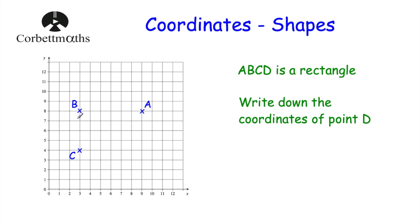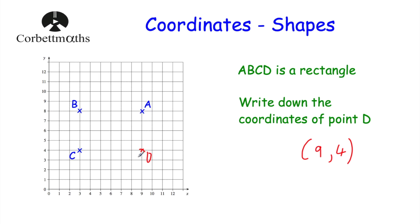So that means that, for instance, if this length is 4 across, this side over here would also be 4, so that means that D would be here. So D would be this point here, and it would be the point with coordinates 9, 4. So write down the coordinates of the point D — it would be 9, 4, because we've got 9 across and 4 up.